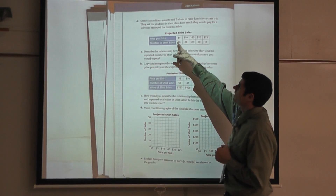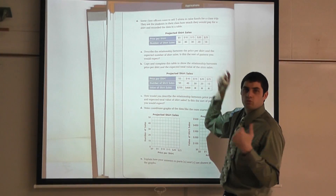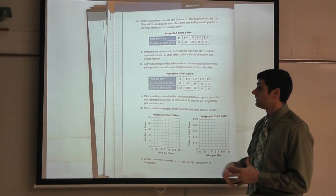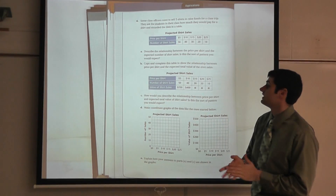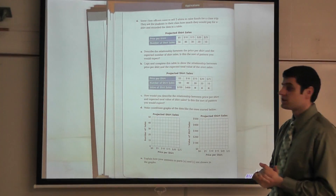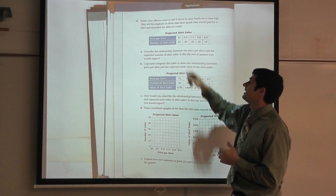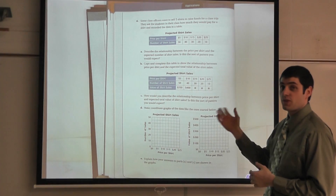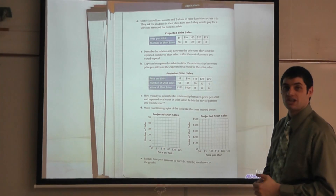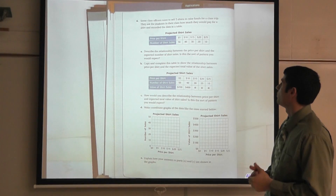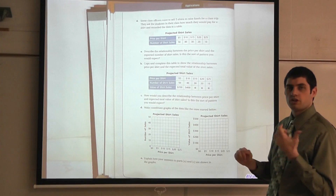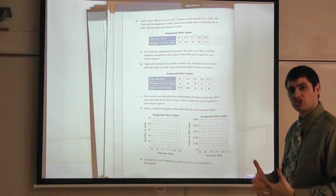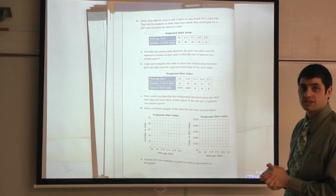Here are their projected shirt sales. 50 students said they would be willing to pay five dollars for a t-shirt. If we increased it to ten dollars, 40 students would spend that. If we charge fifteen dollars, 30 students would pay. If we charge twenty dollars, 20 students, and if we charge twenty-five dollars, only 10 students would be willing to pay. We start to see a pattern in our table for projected shirt sales.